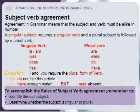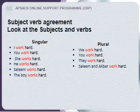I and you require the plural form of the verb. For example: I do not like this article; you have enough water. Though they are singular, we treat them as plural. However, note: I was absent. To apply the rules of subject-verb agreement, remember to identify the real subject and determine whether it is singular or plural.